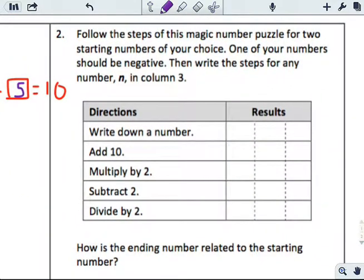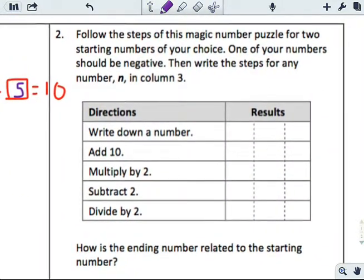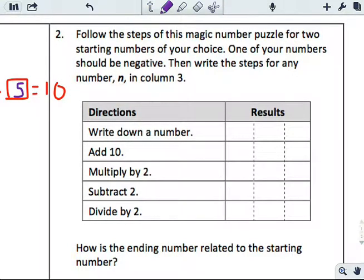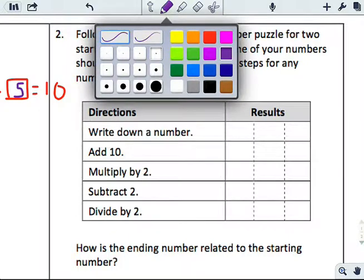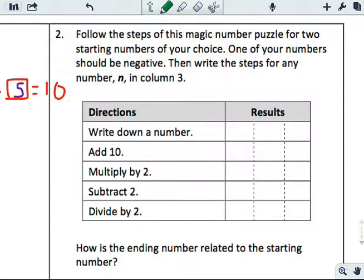Let's move on to the magic number puzzle. I get to choose - I can do this three times. One number is my choice, one has to be negative, and the third, they want me to use the number n. Let's make it 2. Add 10 to that, I get 12. Multiply by 2, I get 24. Subtract 2, I get 22. Divide by 2, I get 11. So I start with 2, end with 11.